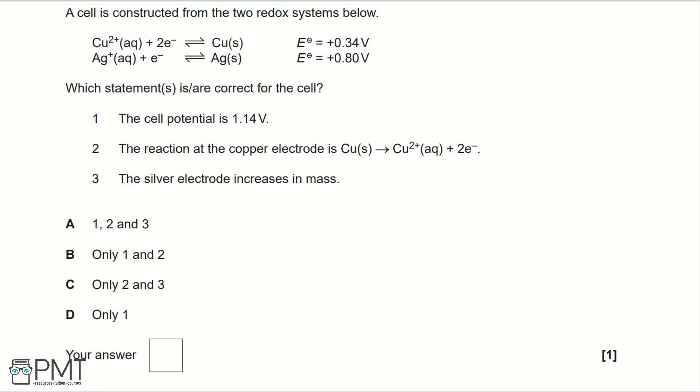A cell is constructed from two redox systems below. Which statement or statements is or are correct for the cell? One: the cell potential is 1.14 volts. Two: the reaction at the copper electrode is Cu solid goes to Cu²⁺ aqueous plus two electrons. Three: the silver electrode increases in mass. Answer choices: A - one, two, and three; B - only one and two; C - only two and three; or D - only one.